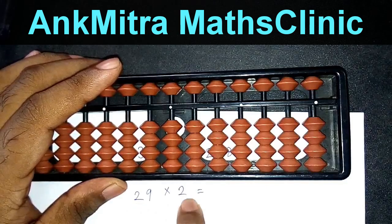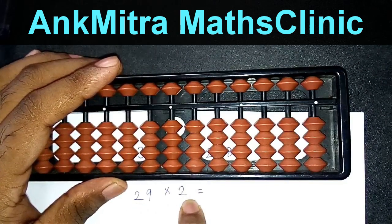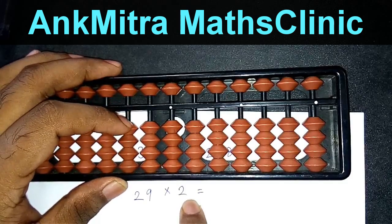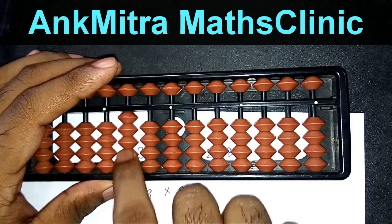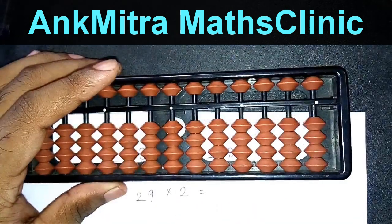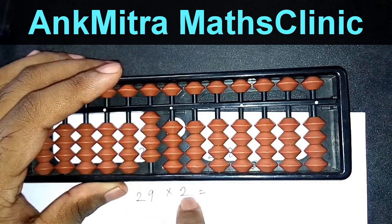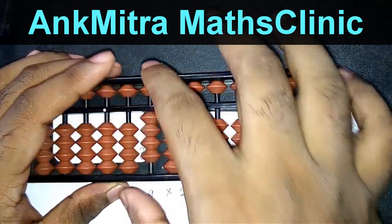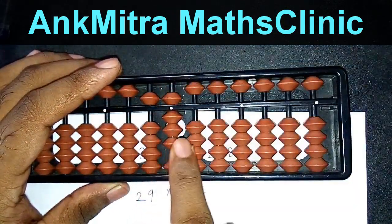So I'll start with 2 twos are. 2 twos are 4 is correct, but in case of abacus, we need to make it a two-digit number. So we need to use it as 04. So we'll start with the third rod and we'll use it as 0 and 4. And the next number is 9 twos are 18. So 18 will be added from the second rod and it will be 1 here and 8 here. So the answer is 58.